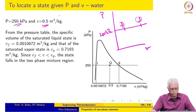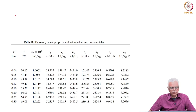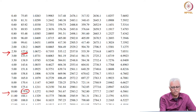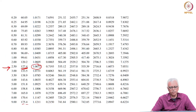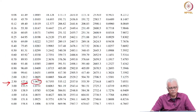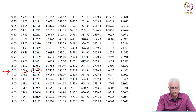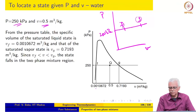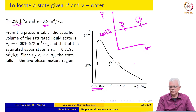In order to determine that, we need to know the specific volume corresponding to saturated liquid and saturated vapor at 250 kPa. So we go to the pressure table. At 250 kPa, that is 2.5 bar, the specific volume corresponding to the saturated liquid is 0.001 — bear in mind this is multiplied by 1000 — so the specific volume is 0.0010672, and the specific volume of the saturated vapor is 0.7193. So we retrieve these values.